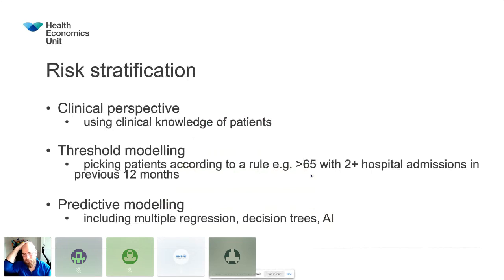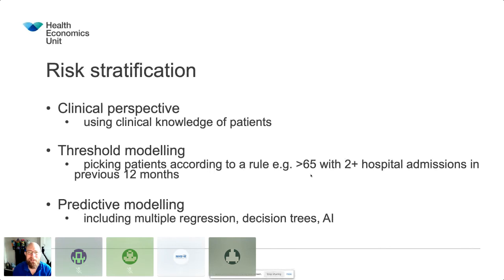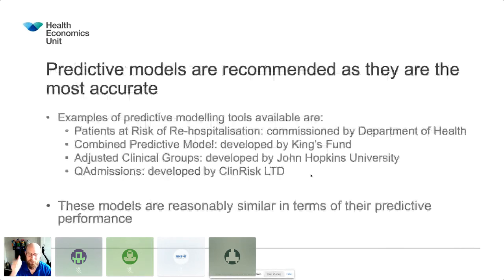Our friends at IBM, ACG, Johns Hopkins, and others would wish you away to talk about predictive modelling. This is the super sexy stuff and hopefully the stuff that we'll be using going forward using integrated datasets. Predictive models are recommended as they're the most accurate. Our clinical colleagues are absolutely fantastic at guessing the people who come in. But because they don't have that whole-population view, they don't get to see overall, and they tend to actually perform the worst. Predictive models consistently perform better.